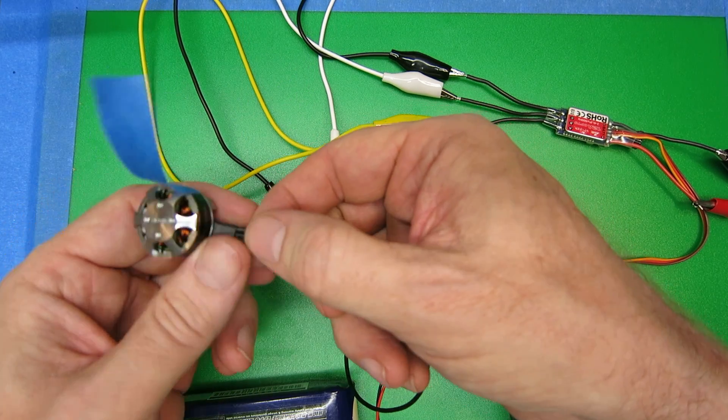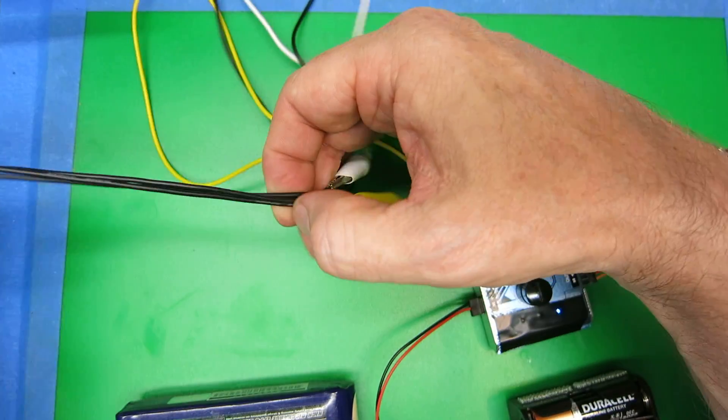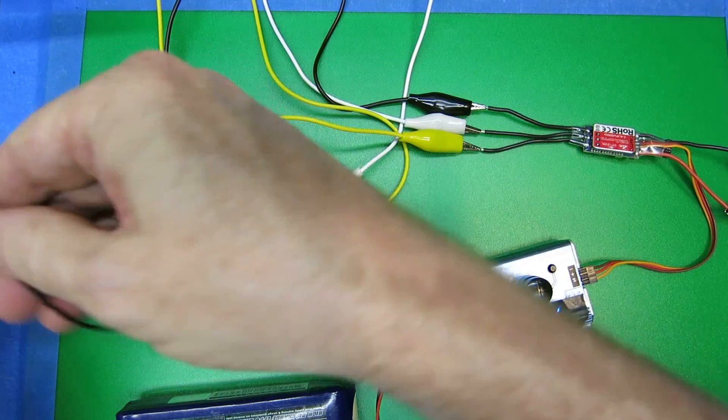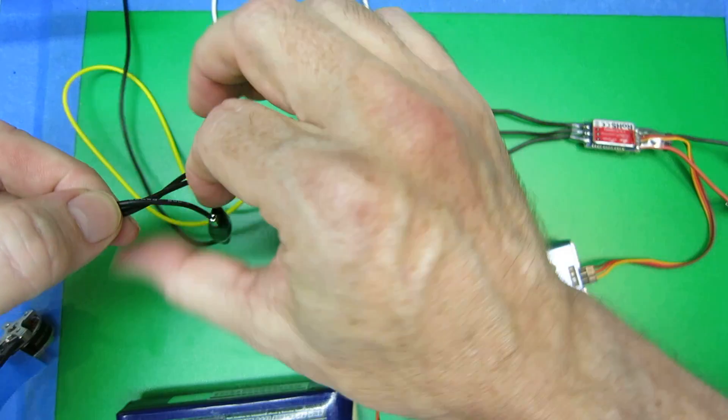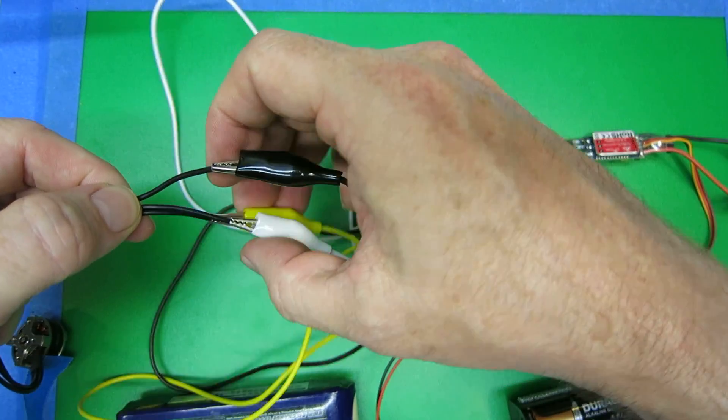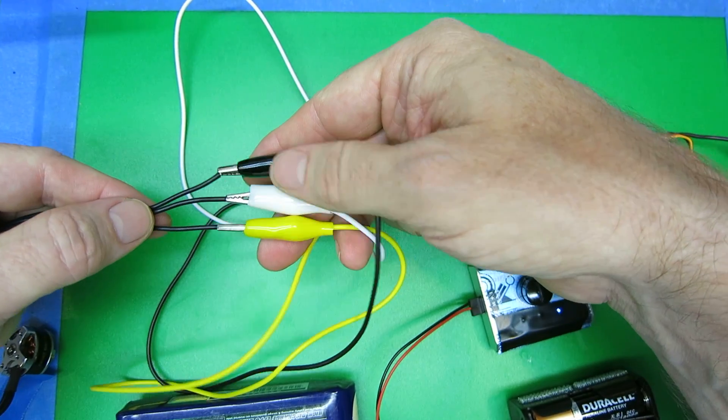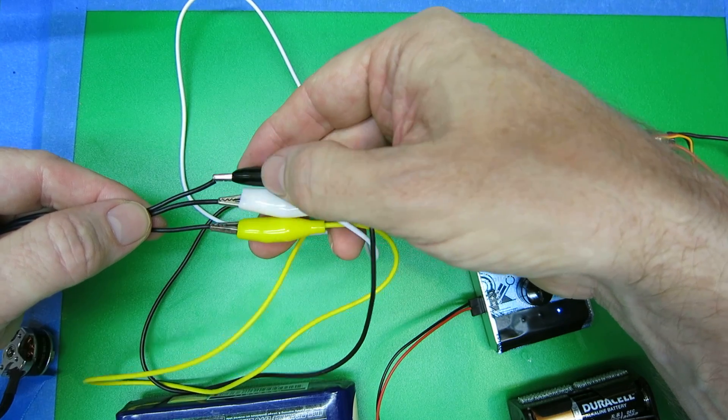So what I did is I just took the motor, pulled the wires out flat, and you can see here that comes out to black, white, yellow.